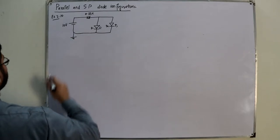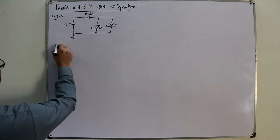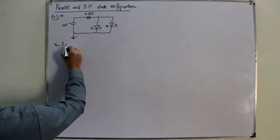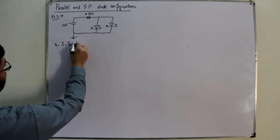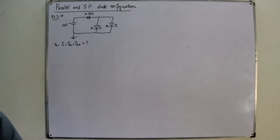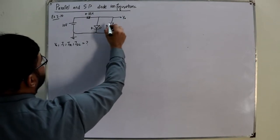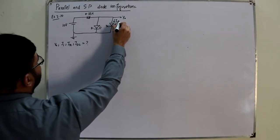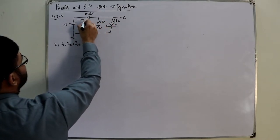This is ground. Determine V₀, I₁, ID1, and ID2 for the parallel diode configuration. V₀ is at this point, ID2 and ID1 are the diode currents, and I₁ is the resistor current.